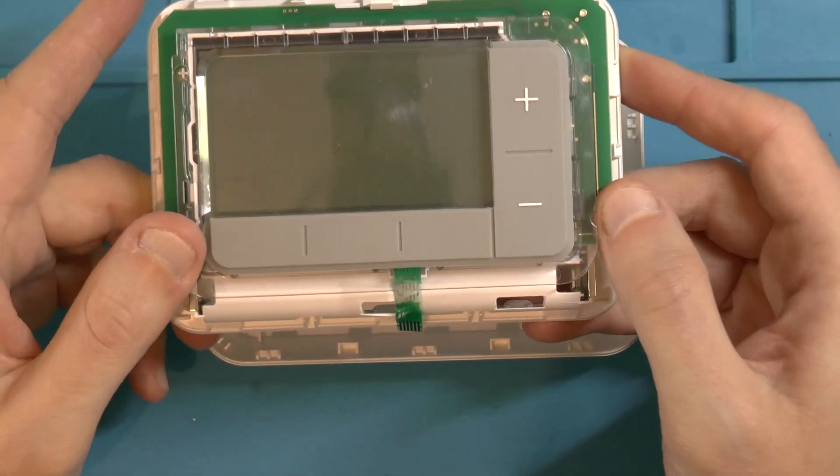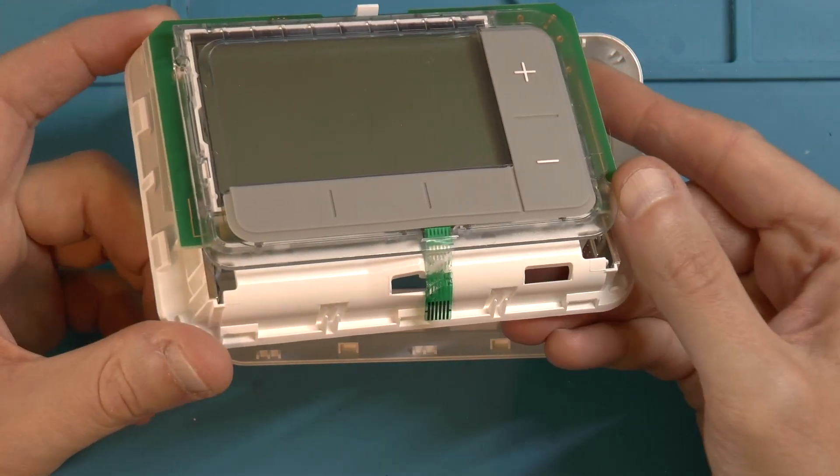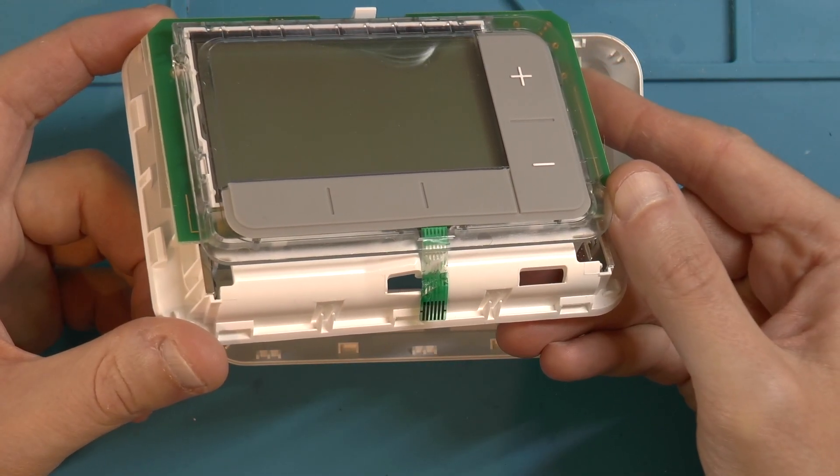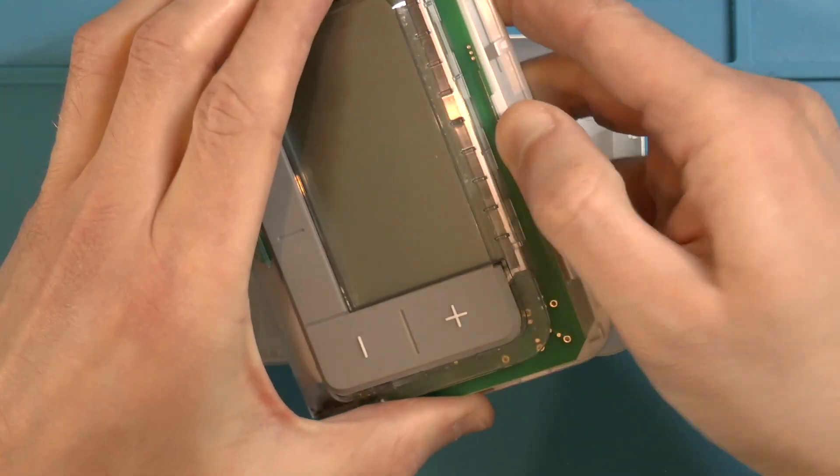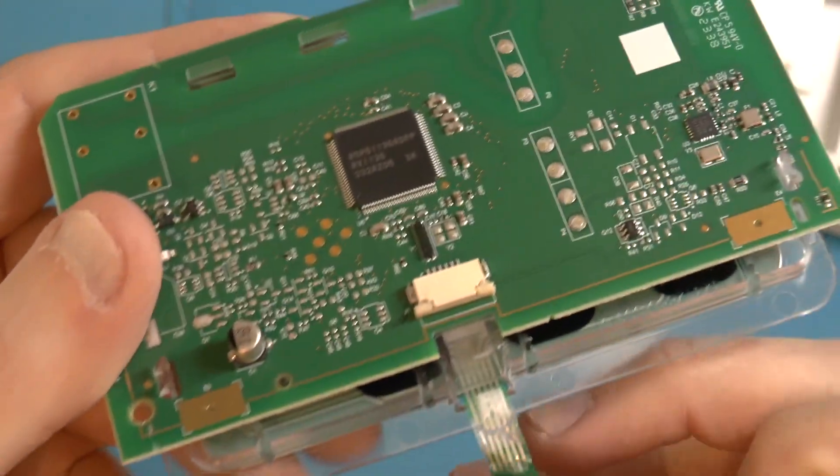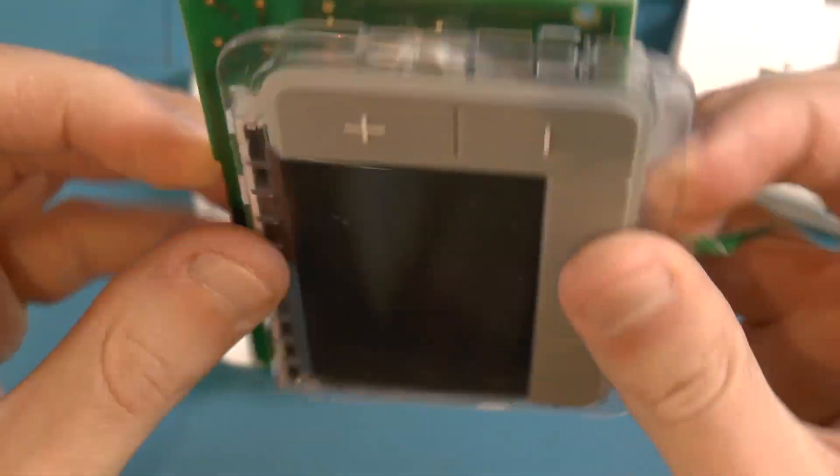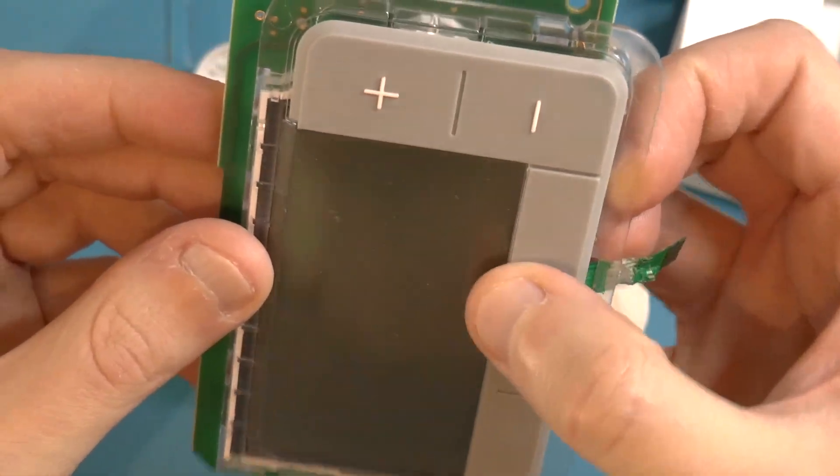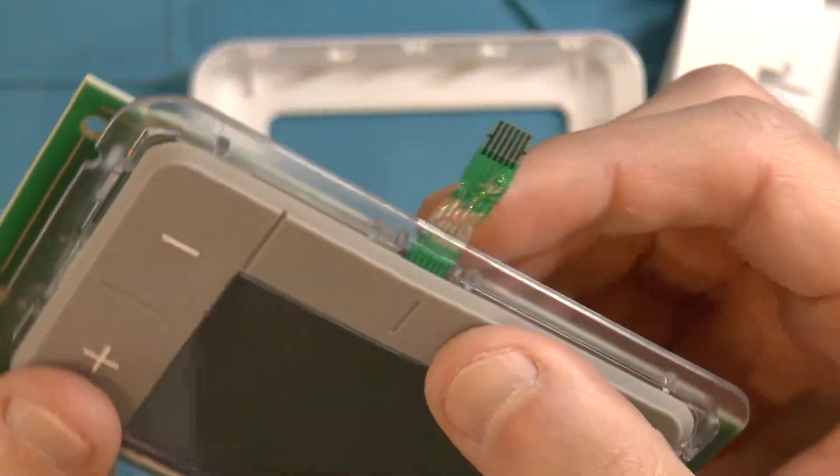Now ribbon cables are kind of a problem when it comes to repairing things because once they're damaged it's very difficult to do anything with them and this one is especially problematic because if we remove this plate here you can see that it's completely integrated into the main display here. There's nothing modular about this at all, it's repair it or nothing and repairing ribbon cables is not easy.